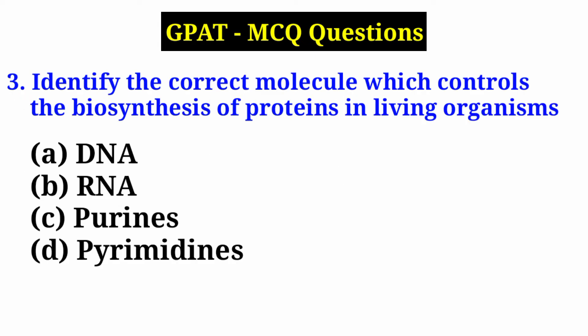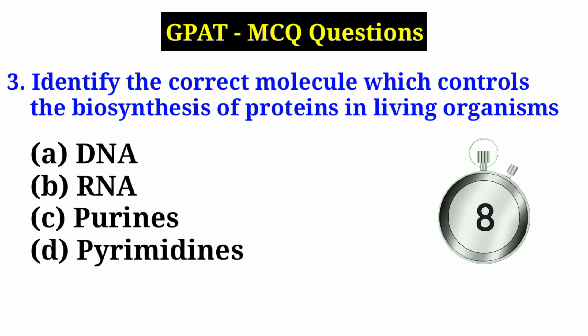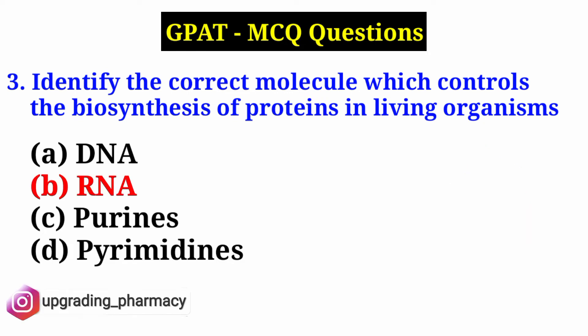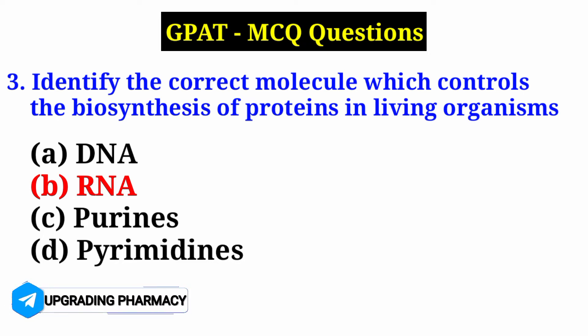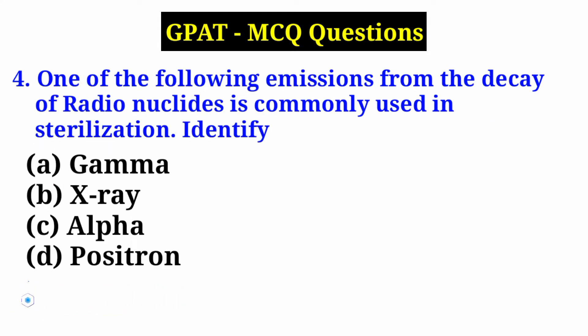Question 3: Identify the correct molecule which controls the biosynthesis of proteins in living organisms. Option A: DNA, Option B: RNA, Option C: purines, Option D: pyrimidines. Answer is Option B — RNA. RNA is the main molecule for the biosynthesis of proteins through the process called translation, so proteins are synthesized from RNA.